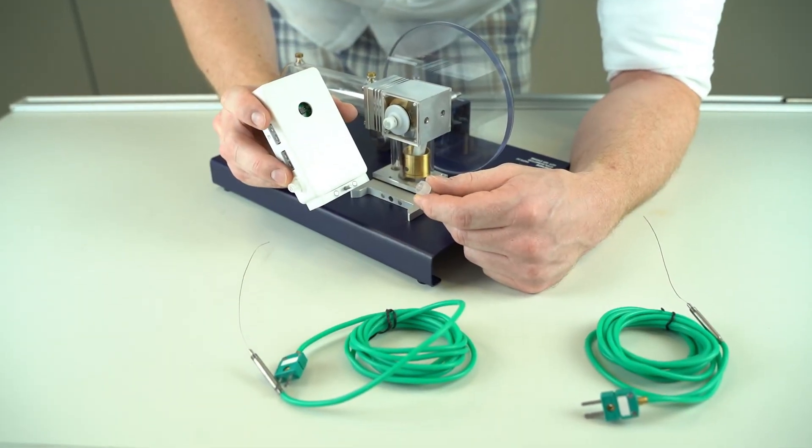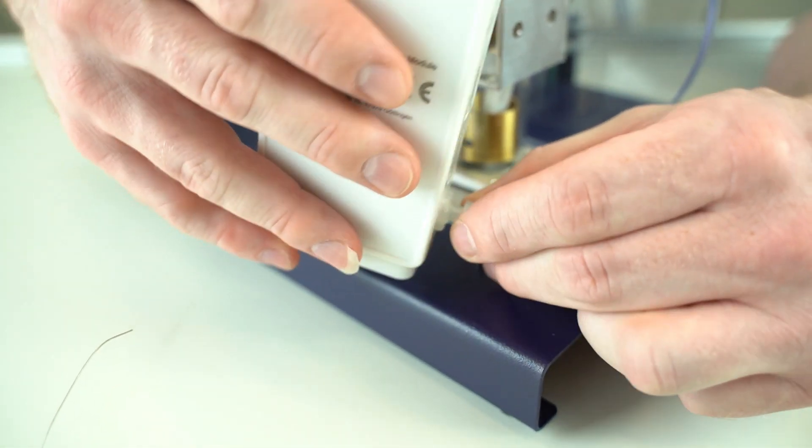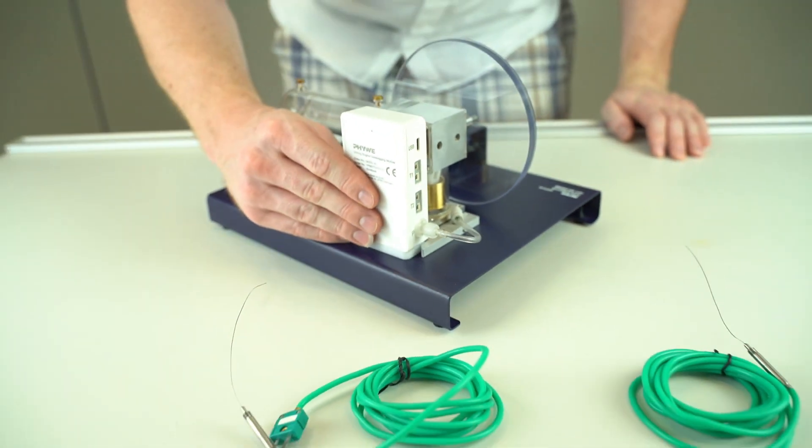Now connect the luer lock of the silicon tube with the module and put the module in its place. It will fit easily thanks to the magnets on the bottom.